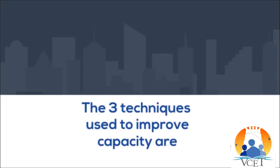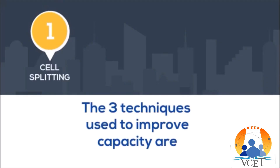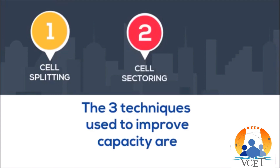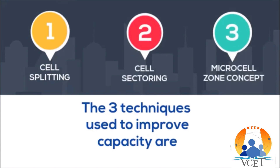There are 3 to 4 techniques used to improve capacity: cell splitting, cell sectoring, and microcell zones.